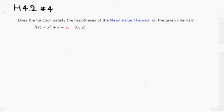We take the derivative, so f prime of x is equal to 3x squared plus 1.